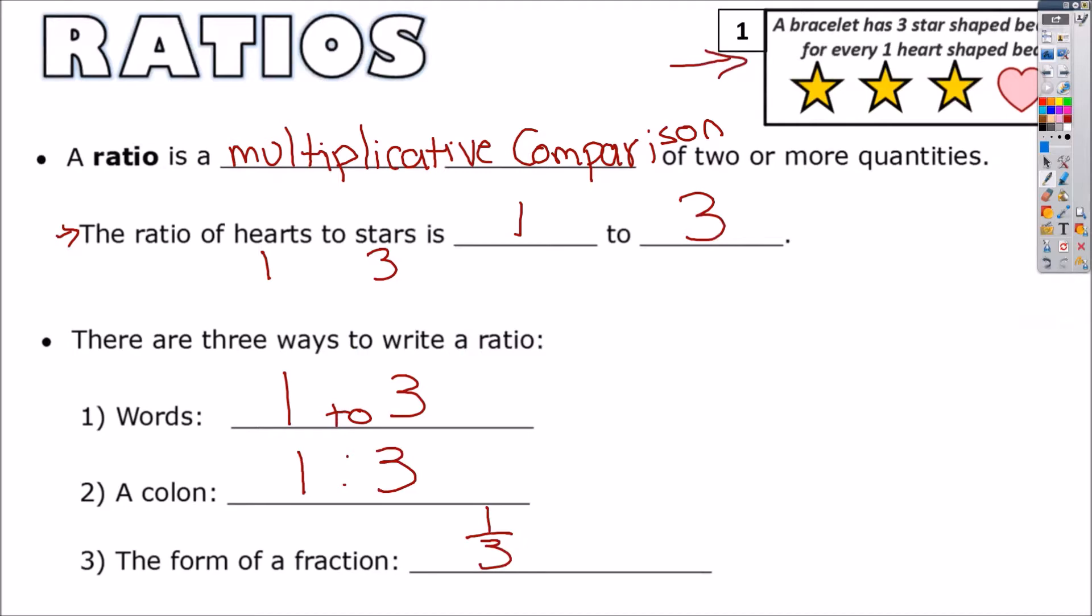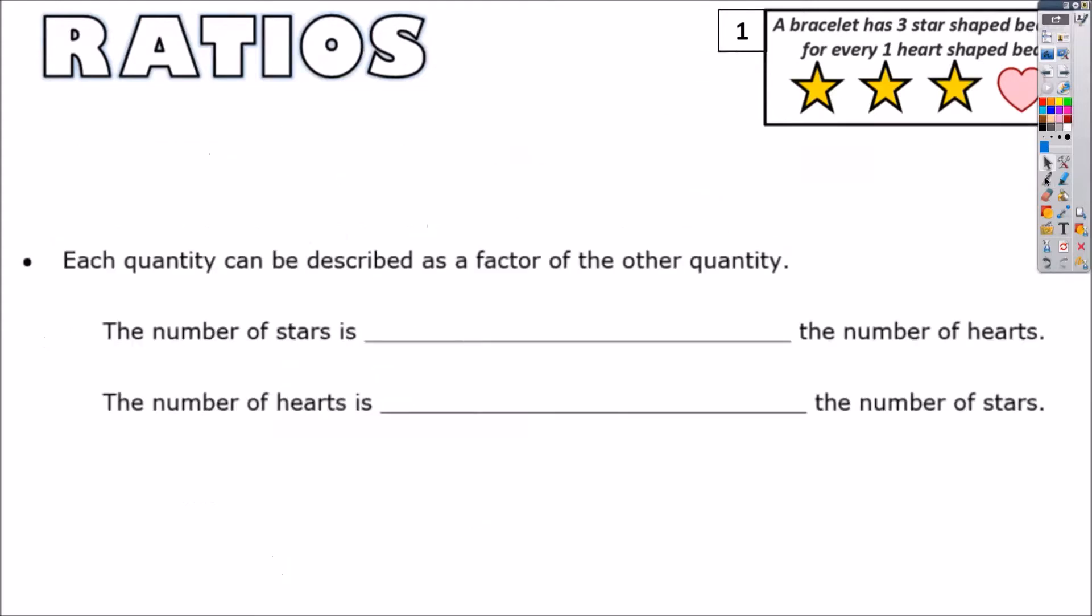You can pause the video if I'm going too fast, but I'm going to move quickly. Some people move faster than others. Now, let's go ahead and look at the bottom. Anytime we see those words, I want you to write the number. You're going to get used to doing this. So it says each quantity can be described as a factor of the other quantity. Remember, factors which are multiplying by.